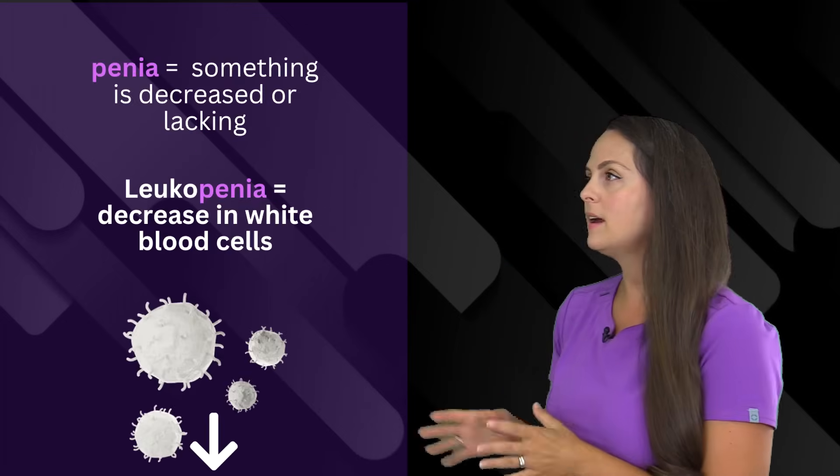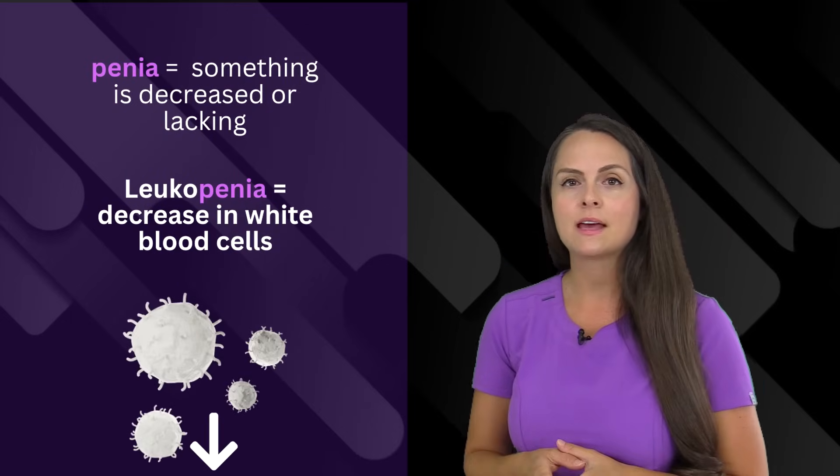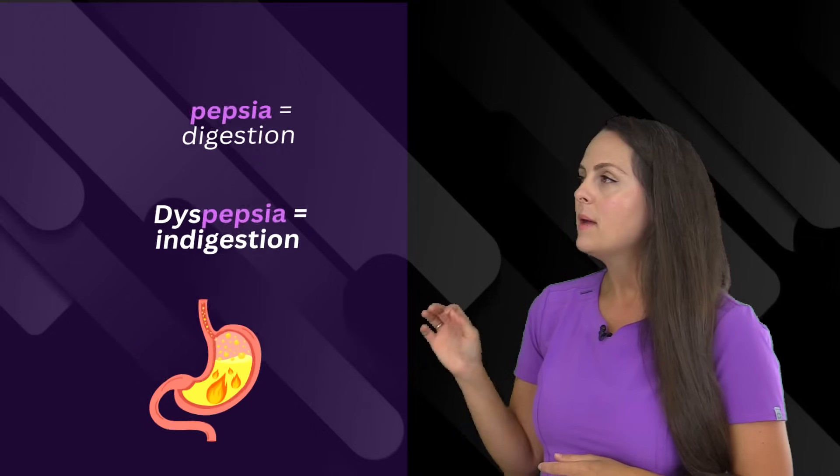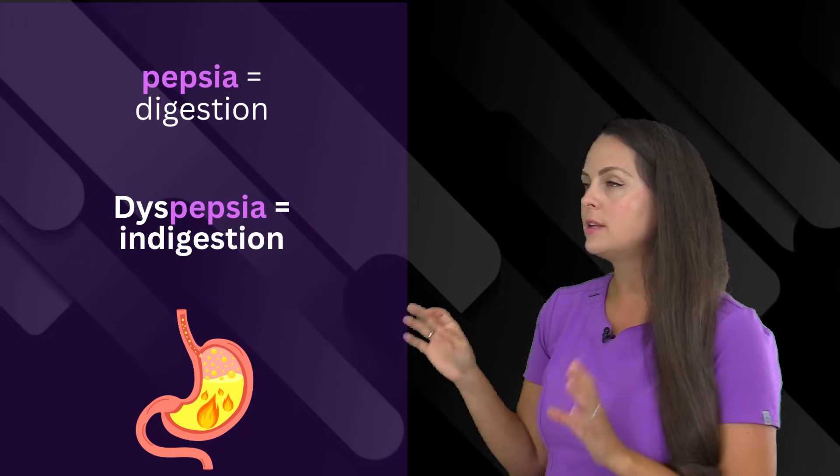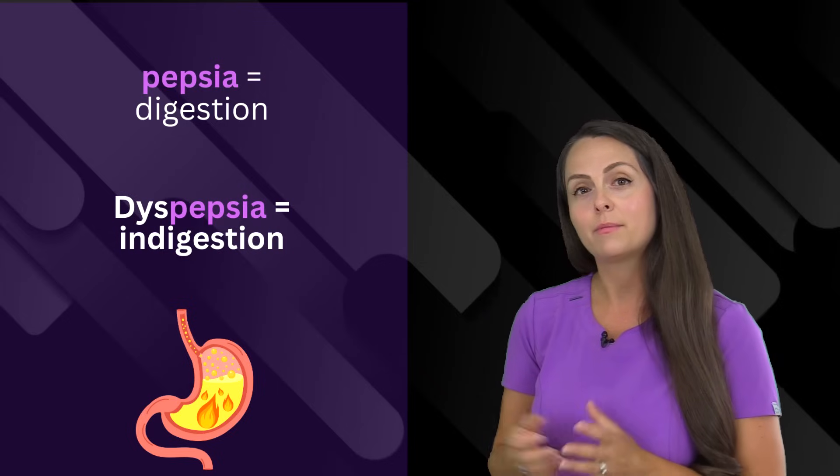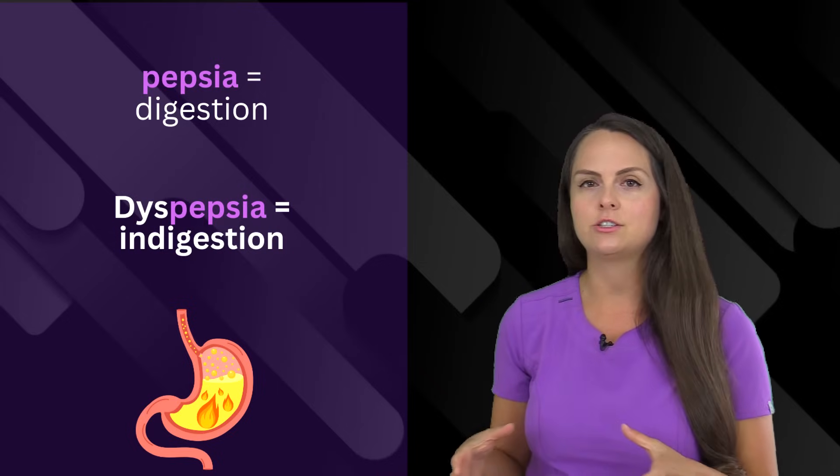Then the suffix penia means decrease or lacking. If someone has leukopenia, that means that they are lacking the proper number of white blood cells. Pepsia refers to digestion. If we say the term dyspepsia, we're talking about the person having difficulty with their digestion. In other words, they're having indigestion.